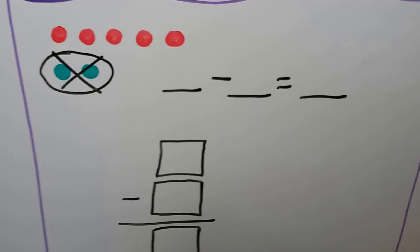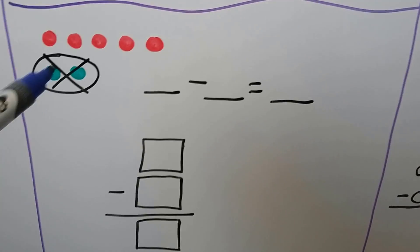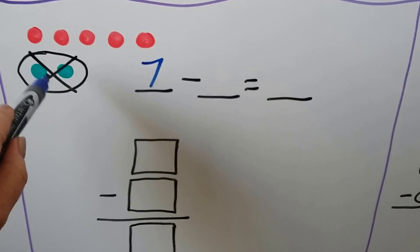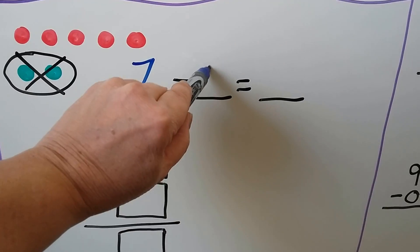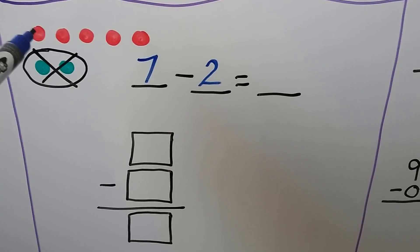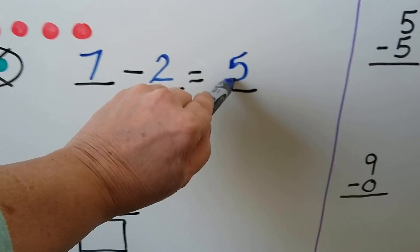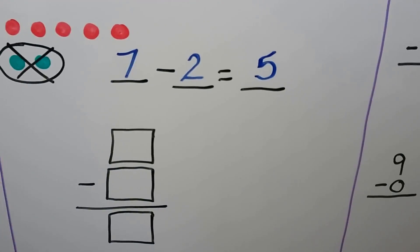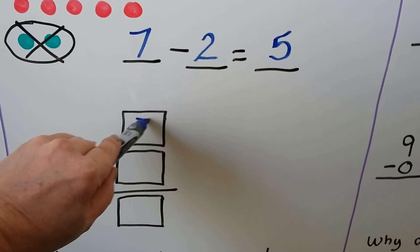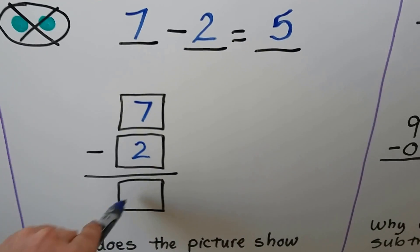We count how many dots there are in all — seven. Two of them are crossed out; that's how many are being taken away. How many are left? Five. Seven minus two is equal to five. We can write it going down: seven minus two is equal to five.